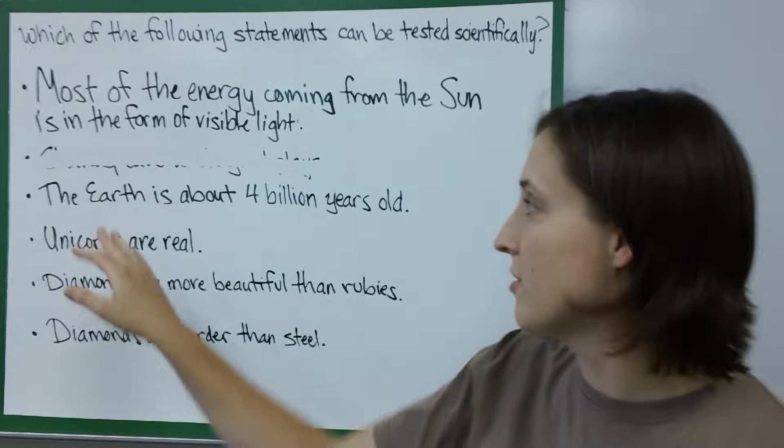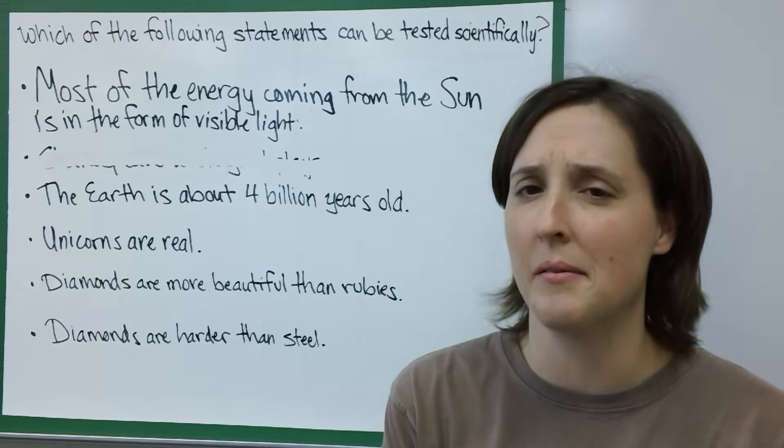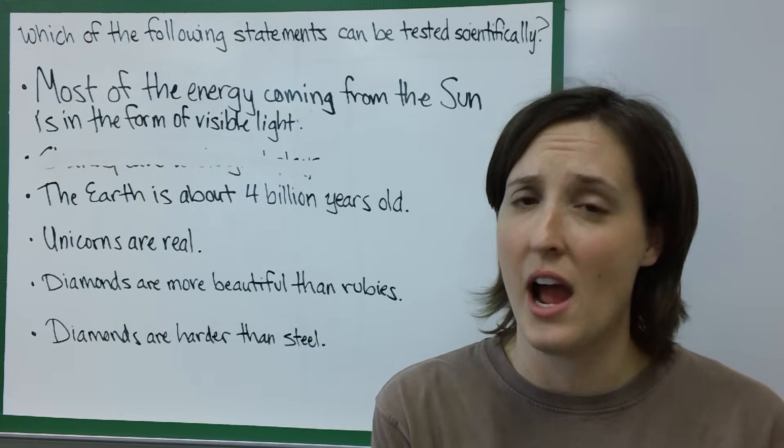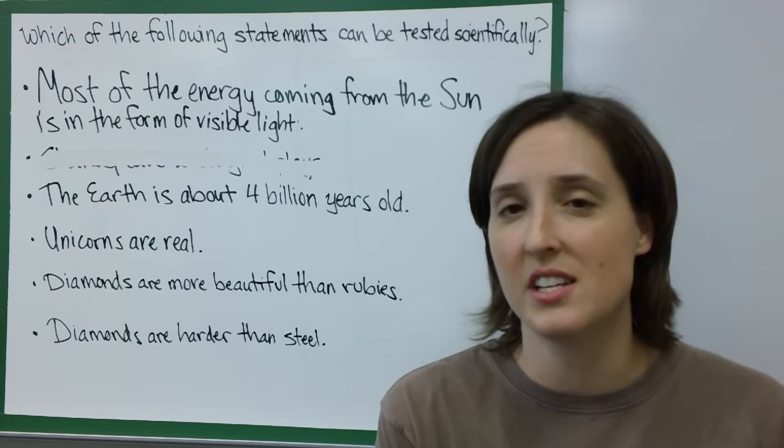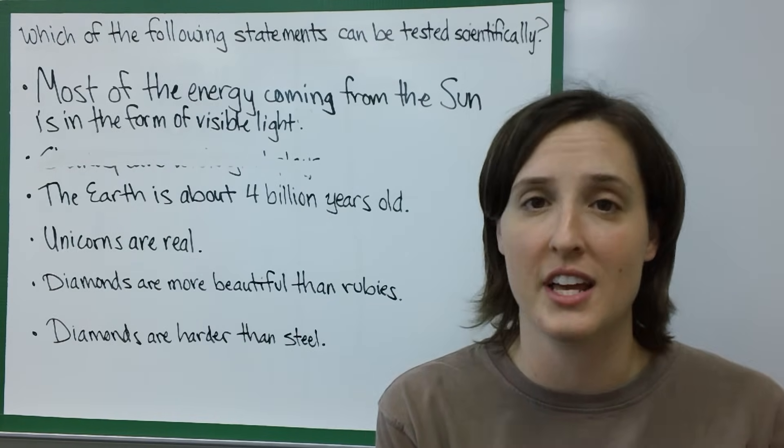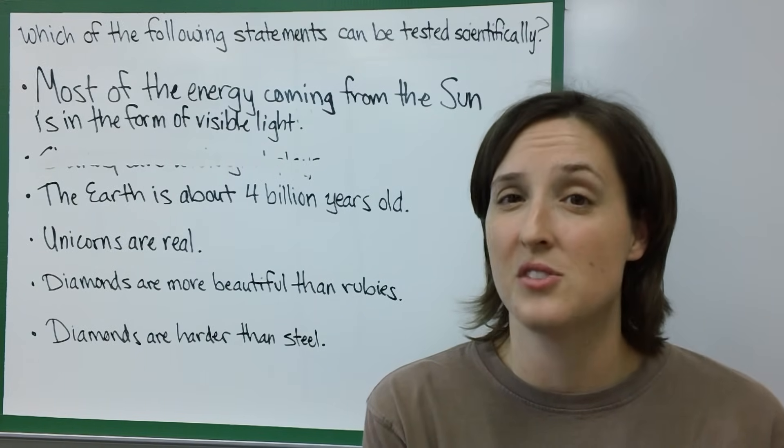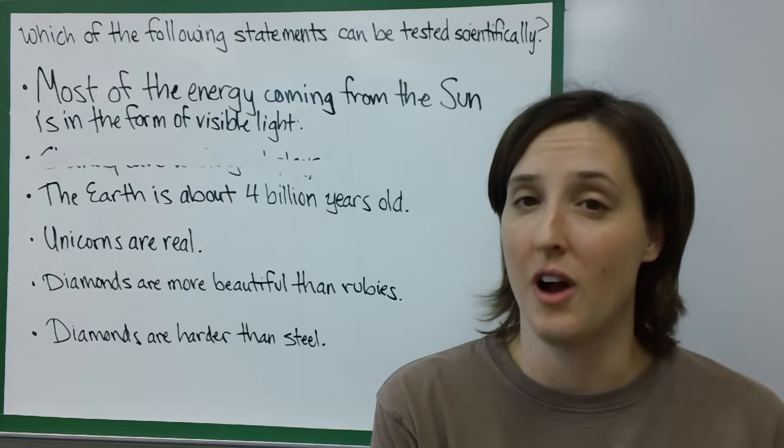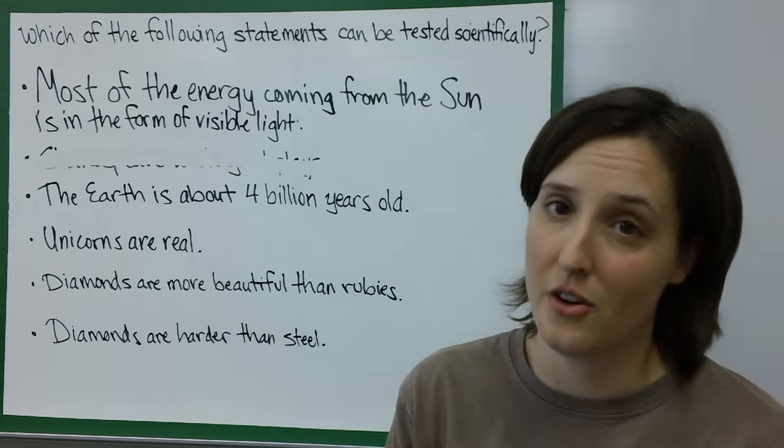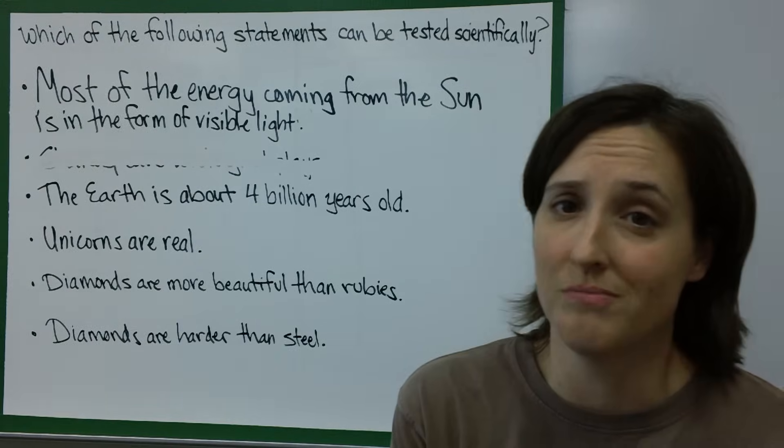The next one says the Earth is about 4 billion years old. This one might seem a little tricky, but it is actually possible to measure how old something is. Scientists can use things like radioactive dating and radiometric dating, and this actually tells us how long these elements have been around. We can actually tell from carbon dating and other forms of radioactive dating that the Earth is about 4 billion years old. Incredible.